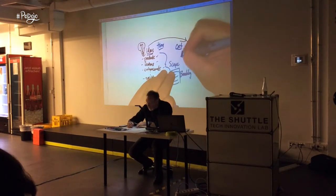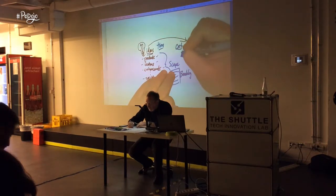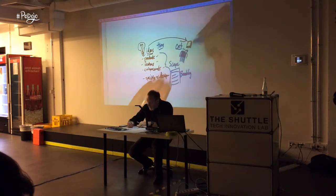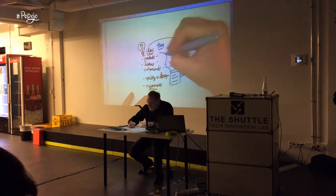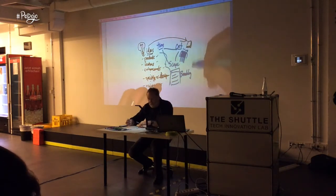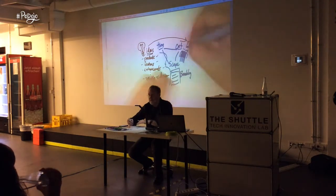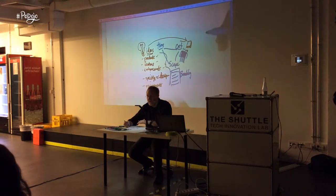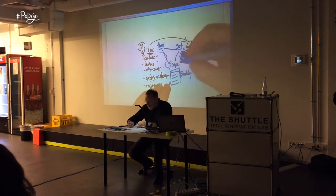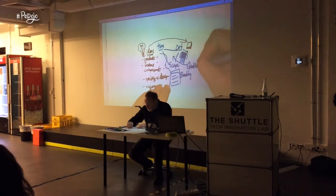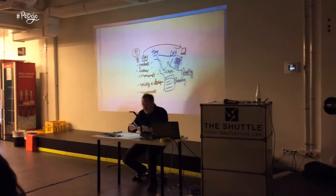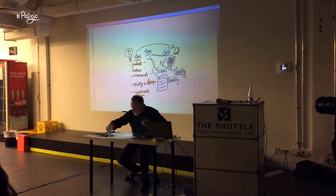Cost in software is oftentimes the teams, the people we have building it. They called this the iron triangle, because of this triple dependency of time, cost, and scope. We worry about that a lot. Somewhere in here is quality, but you can't call it a triangle if there's four things.